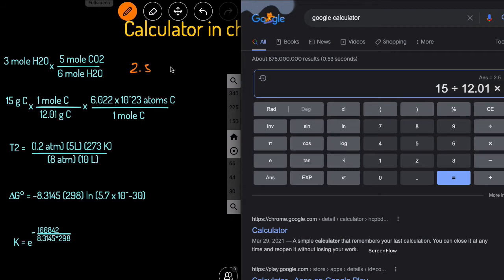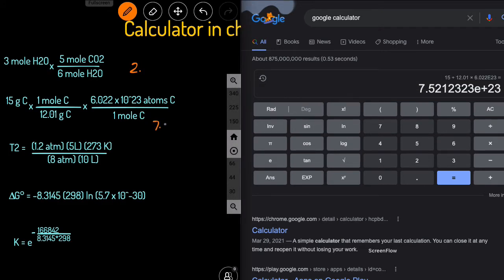The best way to enter this whenever you have times 10 to the power... okay, let's first enter the 6.022, and then to get the 10 to the power, you can just type E and then 23rd. And then that'll give us 7.52 times 10 to the 23rd.